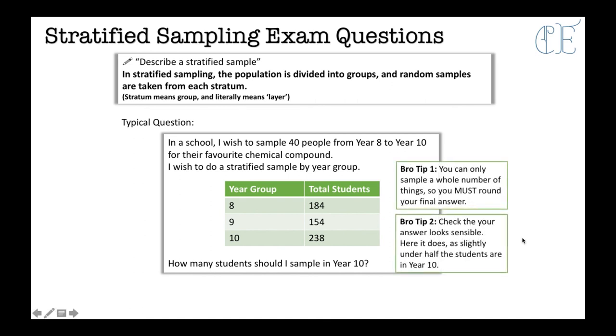Typical question then. In a school, I wish to sample 40 people from year 8 to year 10 for their favourite chemical compound. I'm sure loads of year 8 to year 10 students have got a favourite, but whatever. I wish to do a stratified sample by year group. So how many students should I sample in year 10? So you basically need to look at year 10, and you've got 238. So 238 out of 576. But you are taking a sample of 40. You're not actually taking that amount.